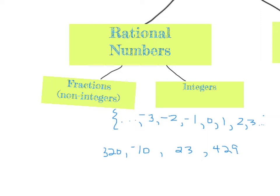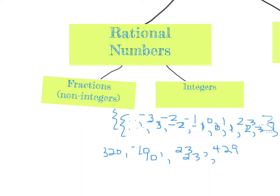For integers, we're talking about numbers that can be negative, like negative three, negative two, negative one, zero, one, two — the whole steps, if you will — and on and on in both directions. So negative ten, positive twenty-three, four hundred twenty-nine, or negative three hundred twenty — those are all integers.